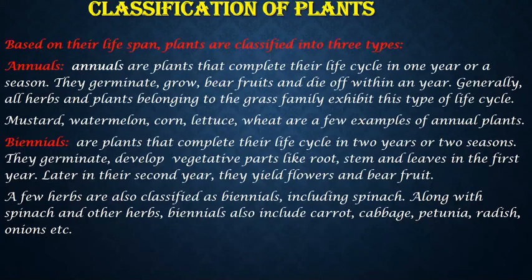Now let's classify the plants based on their lifespan. Plants are classified into three types based on their lifespans: annuals, biennials and perennials. Annuals are plants that complete their life cycle in one year or one season. They germinate, grow, bear fruit and die off within a year. Generally all herbs and plants belonging to the grass family exhibit this type of life cycle. Very common examples are mustard, corn, lettuce, wheat, paddy.